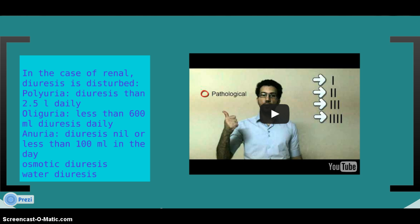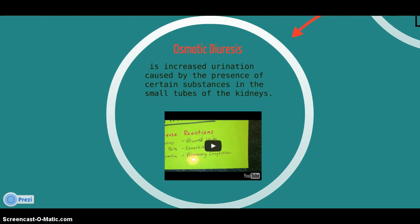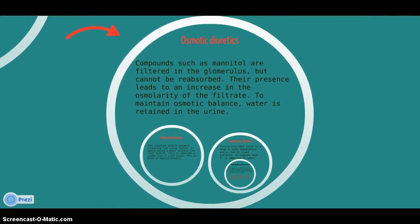Osmotic diuresis and water diuresis. Osmotic diuresis is increased urination caused by the presence of certain substances in the small tubes of the kidney. Compounds such as mannitol are filtered in the glomerulus but cannot be reabsorbed. Their presence leads to an increase in the osmolarity of the filtrate. To maintain osmotic balance, water is retained in the urine.